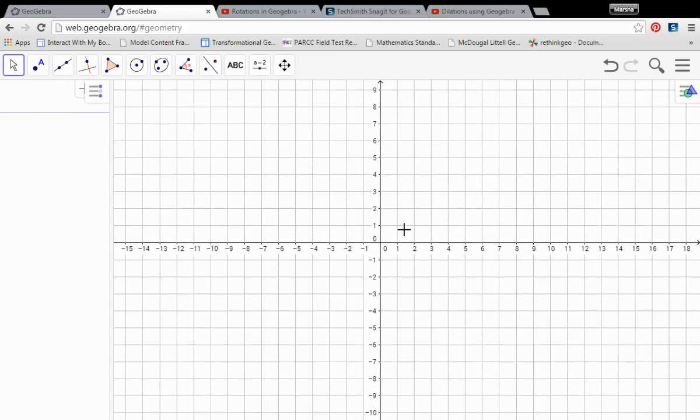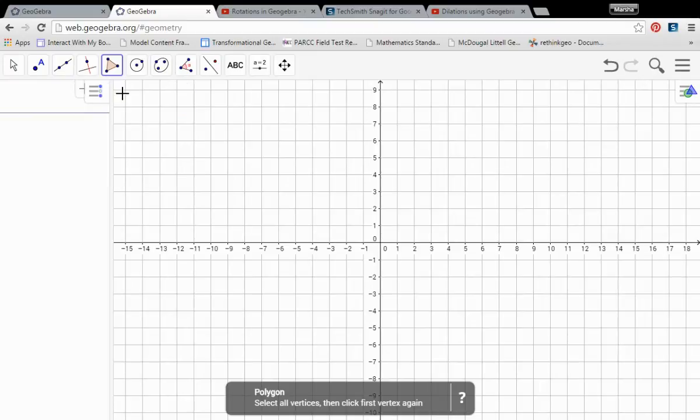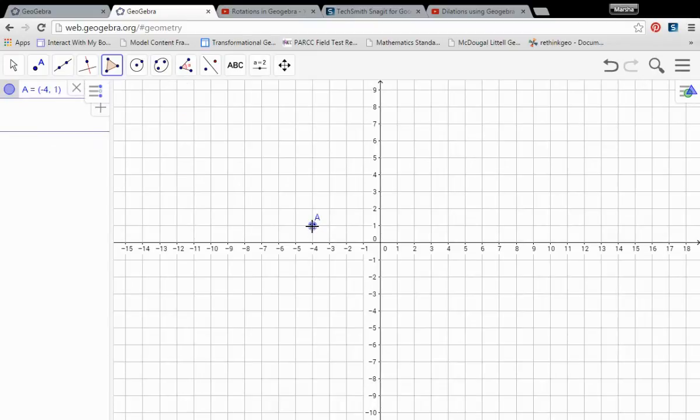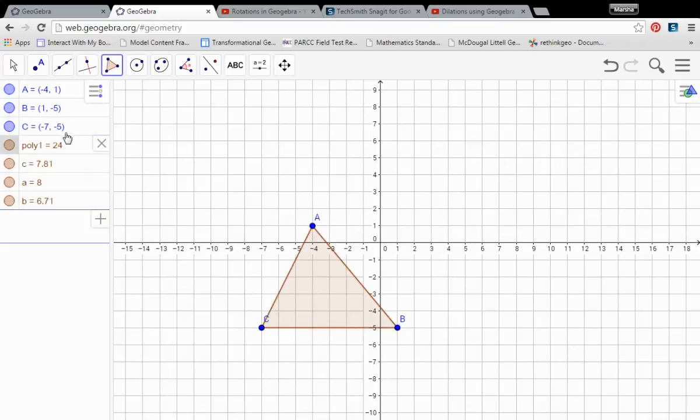So first thing that we need whenever we're going to translate an object is we need the polygon itself. In this case we'll start with a polygon. I'm just going to draw some random points. Remember you can draw the points first and then use the polygon tool to connect them. You could also type the points in over here at the left and use the polygon tool to connect the dots there as well.